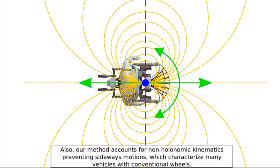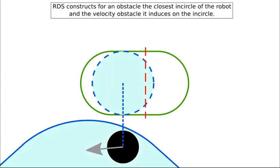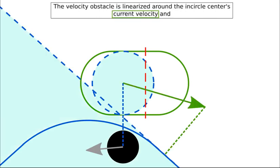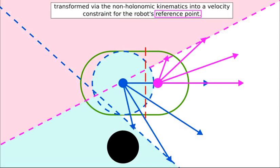RDS constructs for an obstacle the closest in-circle of the robot and the velocity obstacle it induces on the in-circle. The velocity obstacle is linearized around the in-circle center's current velocity and transformed via the non-holonomic kinematics into a velocity constraint for the robot's reference point.